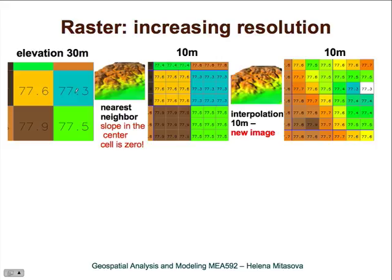In a bit more detail: with nearest neighbor, values are simply assigned to the higher-resolution cells. With interpolation, values between original grid cell centers are calculated using a continuous function — either by linear method, bicubic, or spline. We will talk about these interpolation methods later.